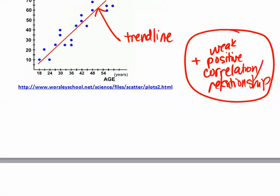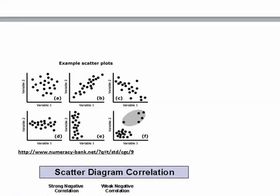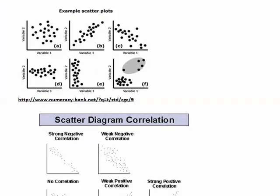There are lots of examples where there may or may not be a correlation. In one example, dots scattered everywhere show no correlation. In another, a trend line going upward shows a positive correlation — when one variable goes up, the other goes up too. In a negative correlation, when one variable increases the other decreases; for example, the more exercise someone does, the less body fat they might have. This is called a negative correlation or negative relationship.